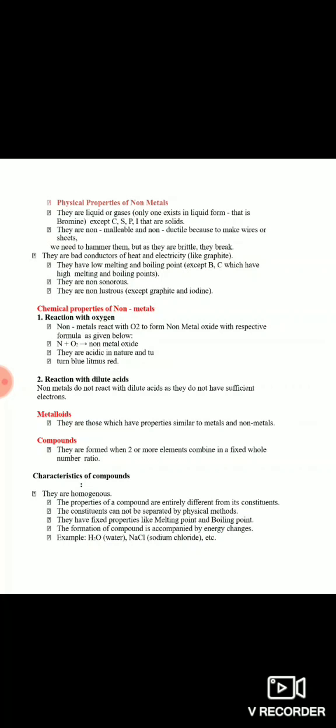Agar hum chemical properties of non-metals ki baat karein - non-metals jab bhi oxygen ke saath react karte hain to woh non-metal ka oxide banate hain. Sabse simple example hum carbon ki le sakte hain - carbon ek non-metal hai, jab bhi carbon oxygen ke saath react karta hai woh carbon dioxide banata hai. Aur jo non-metal ke oxide hote hain woh saare ke saare acidic hote hain - acidic means unka pH 7 se less hoga. Koi cheez acidic hai ya basic hai isko hum check karte hain litmus paper ki help se. Acidic ke case mein litmus paper blue se red ho jaata hai. Non-metals dilute acids ke saath react nahi karte.